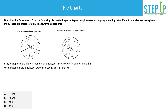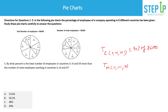The fifth question asks: by what percent is the total number of employees in countries 5, 6, and 7 more than the total number of male employees in countries 2, 3, and 4? Total employees in countries 5, 6, 7 is 17% + 16% + 7% = 40% of 86,000. Male employees in countries 2, 3, 4 is 10% + 12% + 18% = 40% of 56,000.